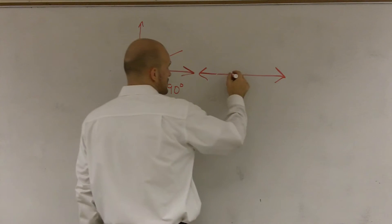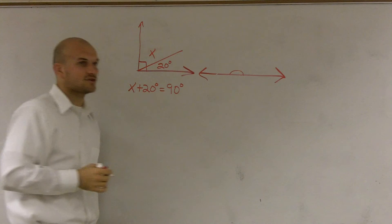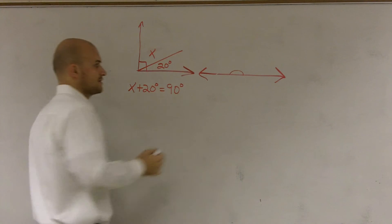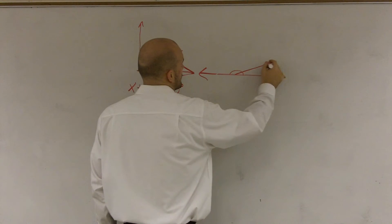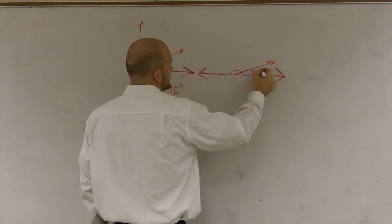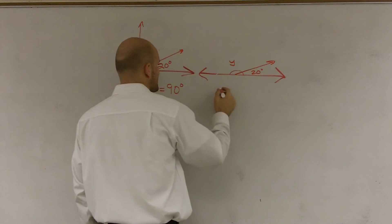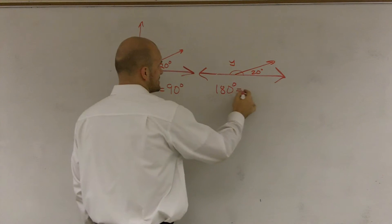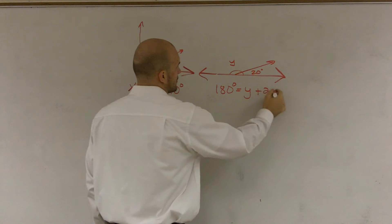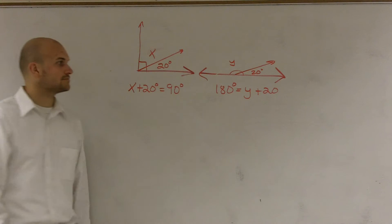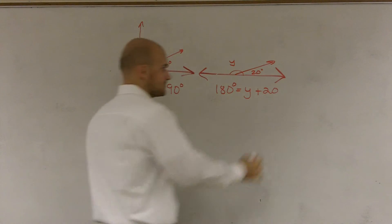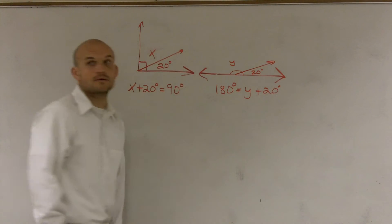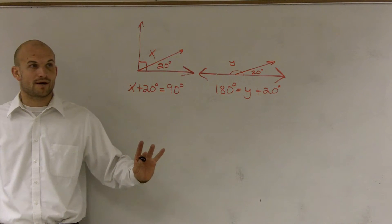Then we learned about straight angles, and straight angles we learned equaled 180 degrees. So if I had that same angle and I said this was 20 degrees and this was y, what we could say was 180 degrees, which is my straight angle, is equal to y plus 20 degrees.